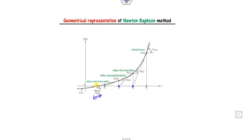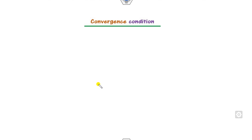As we can see, the process looks convergent. But does it converge for all initial guesses? The answer is: may or may not be true. So for that, we need to check the convergence condition for the Newton-Raphson method.